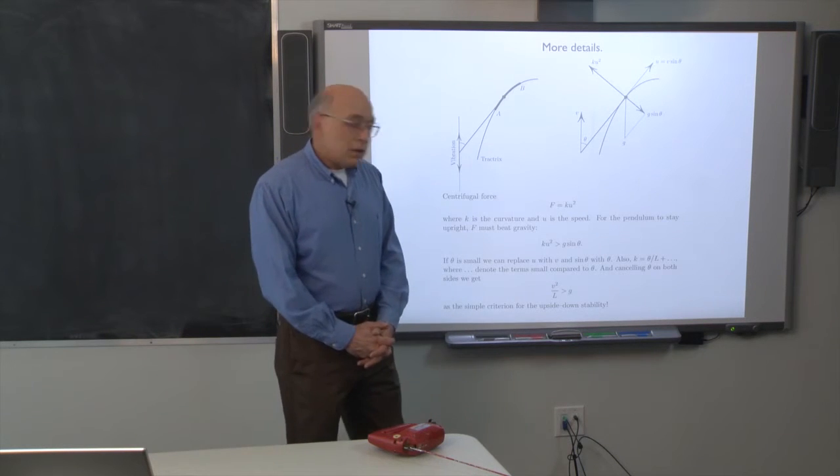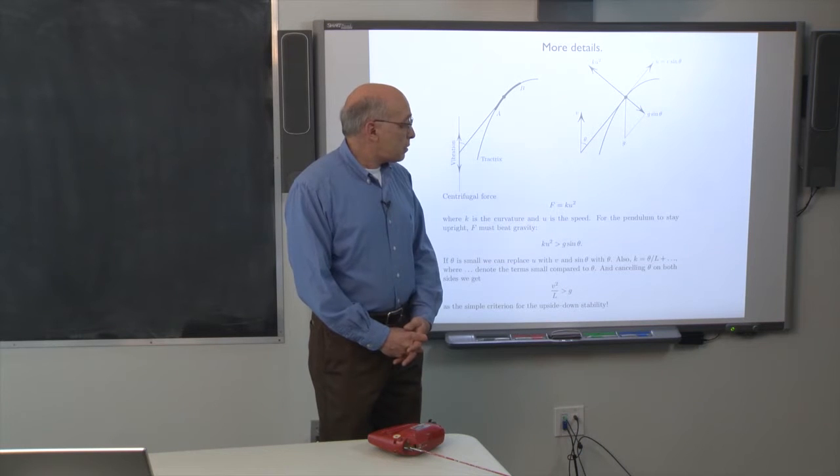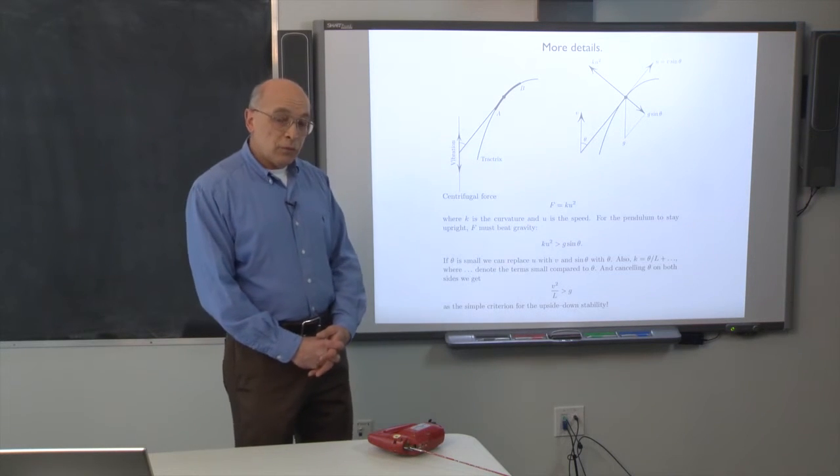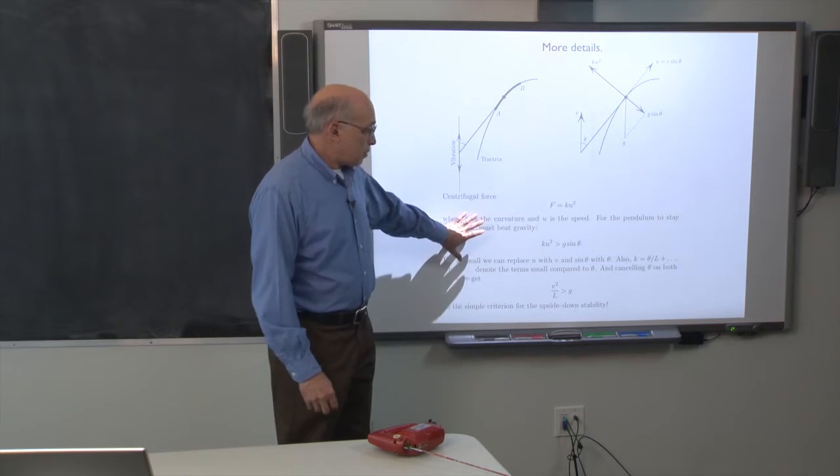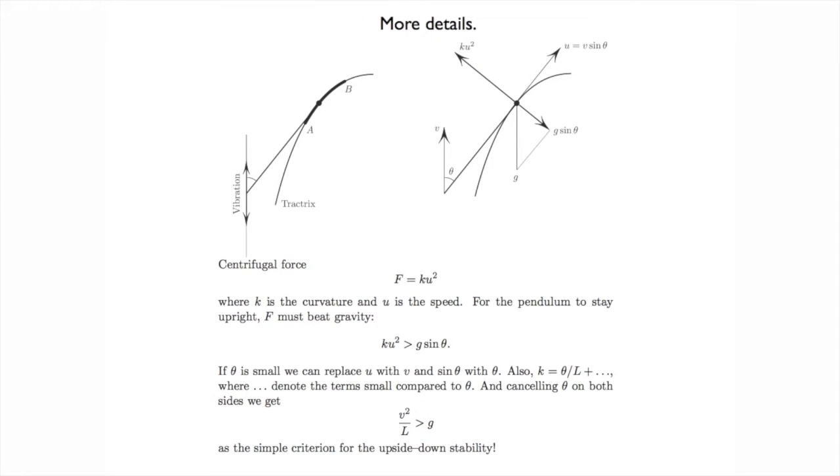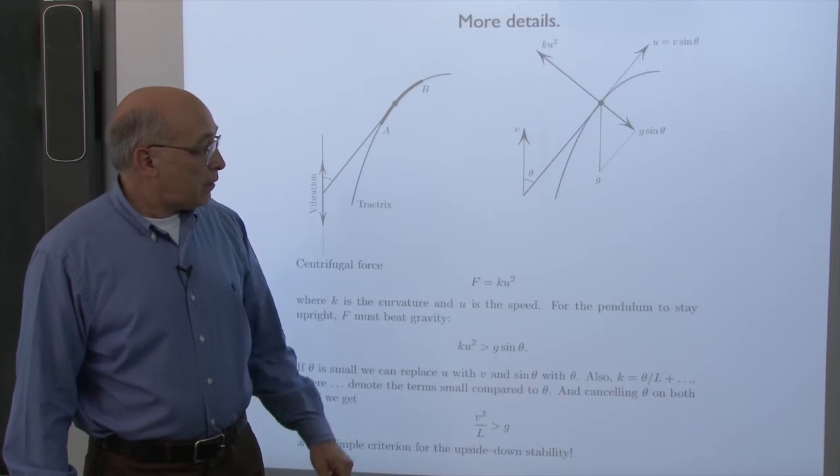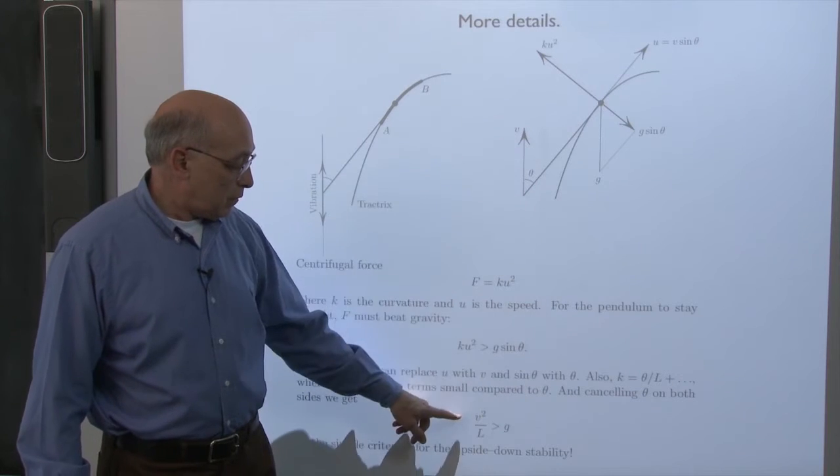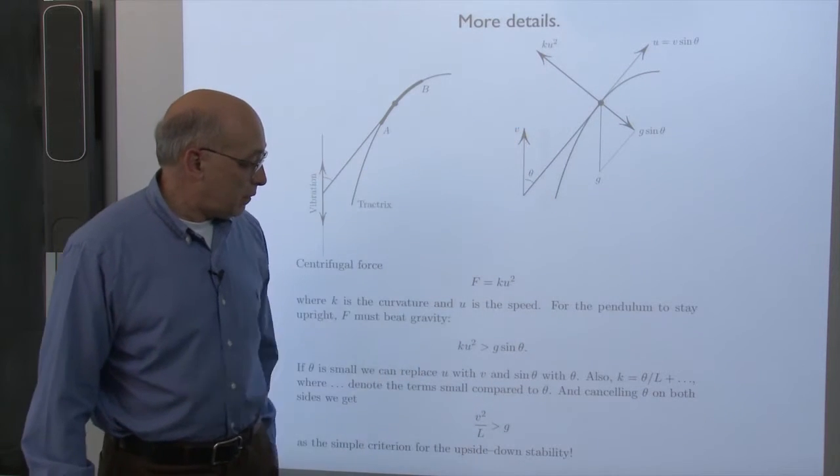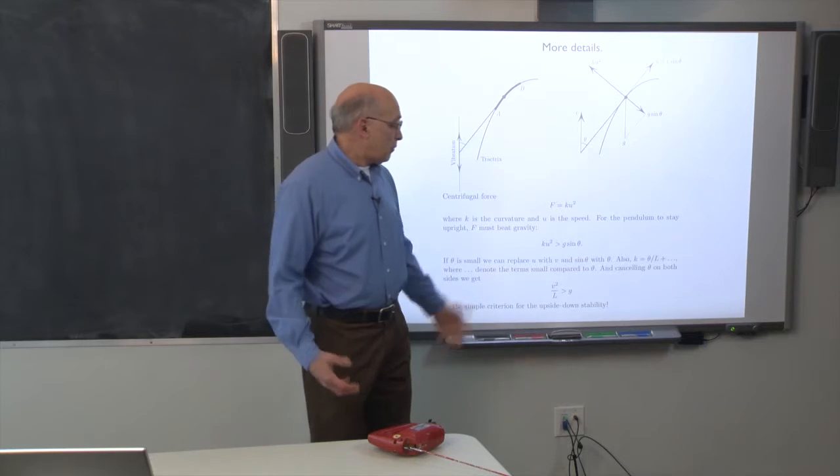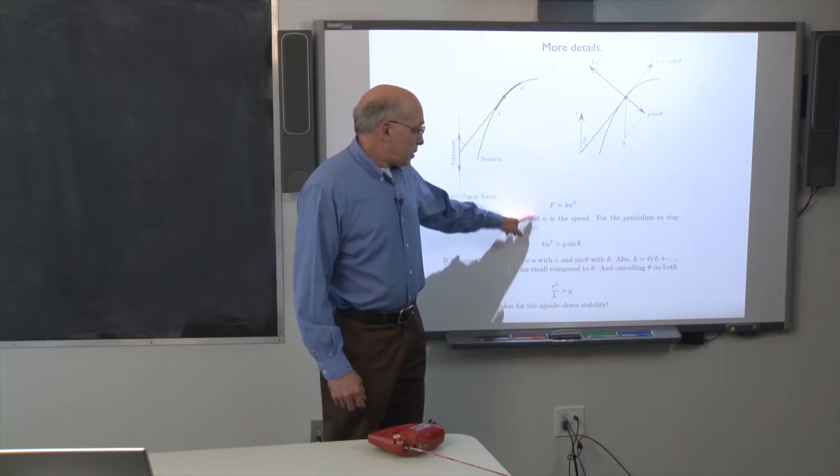One can say this is very non rigorous mathematically. But if one converts this intuitive discussion into a formal proof, which I will skip, but just to give an idea, this is how short the discussion is. The thing is, what does it take to make the pendulum stand upside down? For that, this centrifugal force must beat gravity. To cut the short story even shorter, that very quickly gives a condition on the speed of the pivot, rather the average speed of the pivot, the length of the rod, and the gravitational acceleration. If this inequality holds, then the pendulum is stable. This is the length of the derivation.